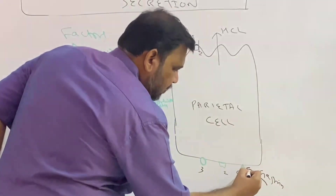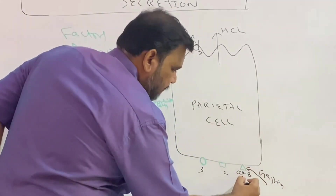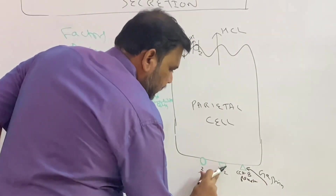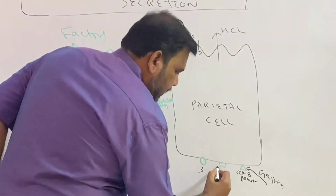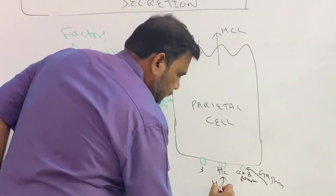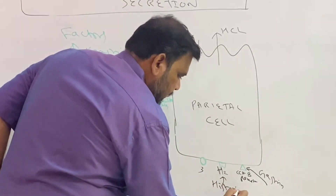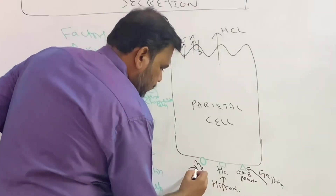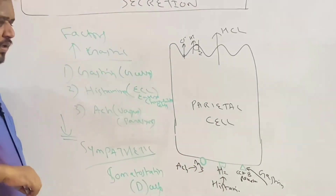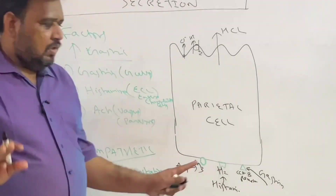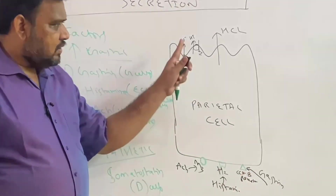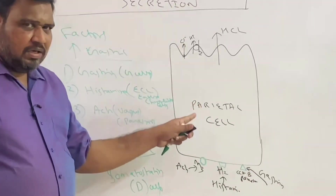Gastrin acts on the CCKB receptor. Histamine acts on the H2 receptor. Acetylcholine acts on the M3 receptor. All three of these receptors — CCKB, H2, and M3 — are present on the parietal cell.